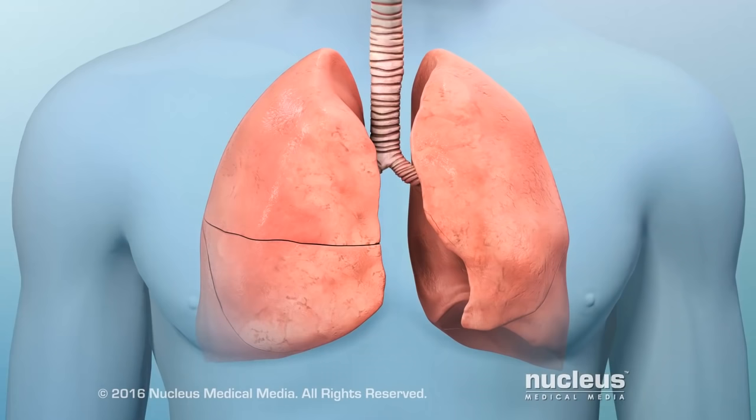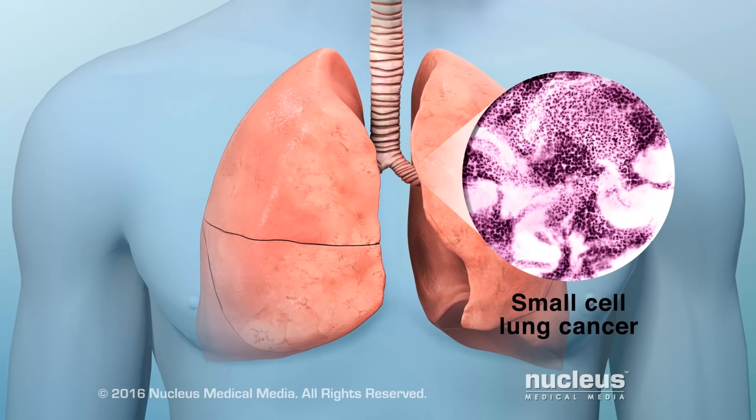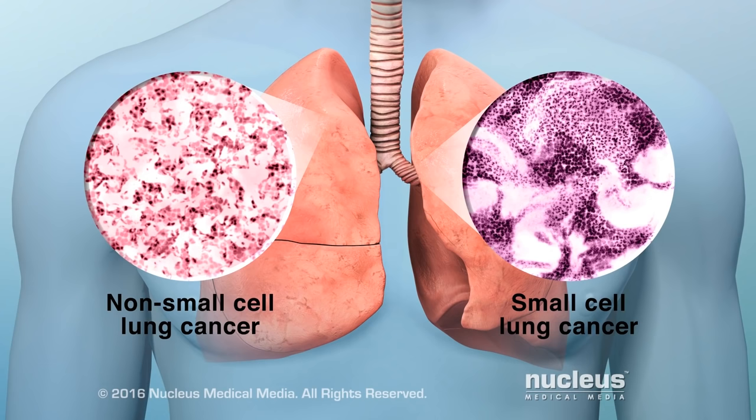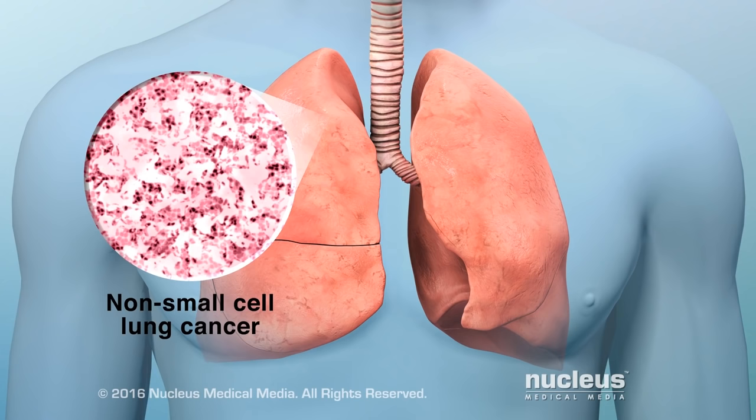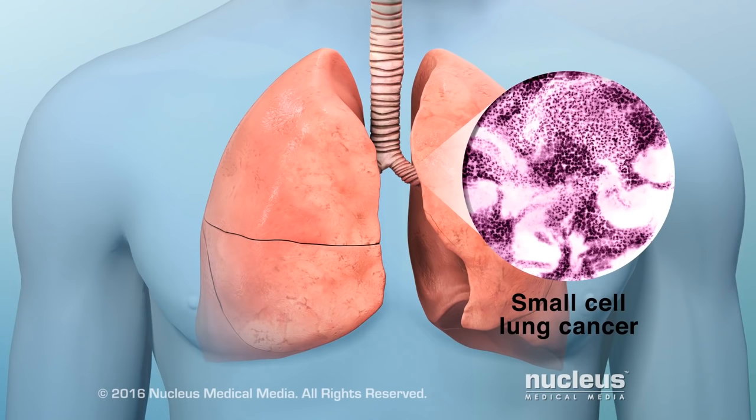There are two main types of lung cancer: small cell lung cancer and non-small cell lung cancer. They are named for the kinds of cells in the cancer and how they look under a microscope. Non-small cell lung cancer is the most common type. Small cell lung cancer is the most aggressive type — it grows and spreads more quickly.